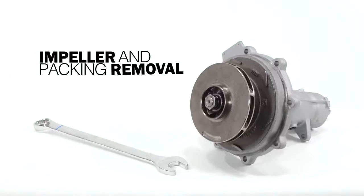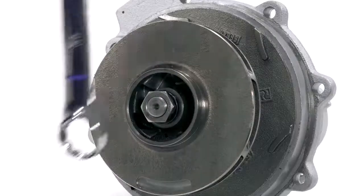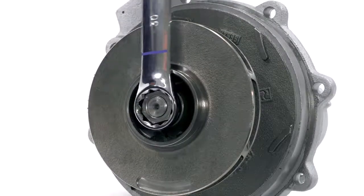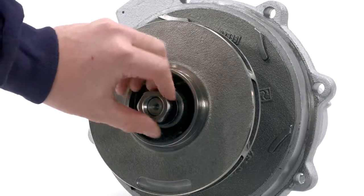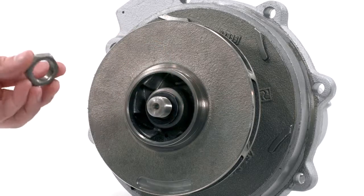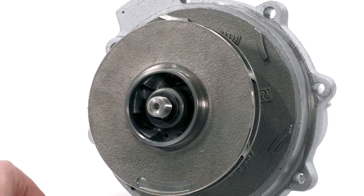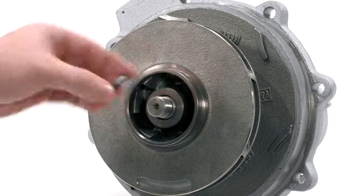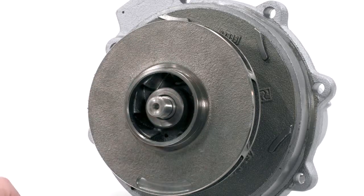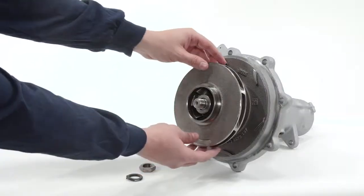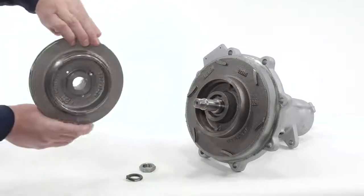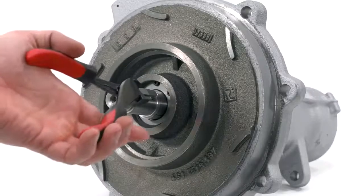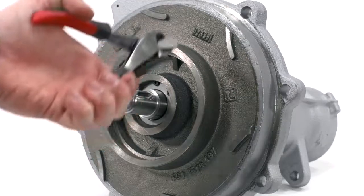Impeller and packing removal: Remove the impeller nut and lock washer by unscrewing it off the pump shaft with a 30mm wrench. You should now be able to slide the impeller off the shaft. Remove the impeller key from the shaft using a pair of side cutters.